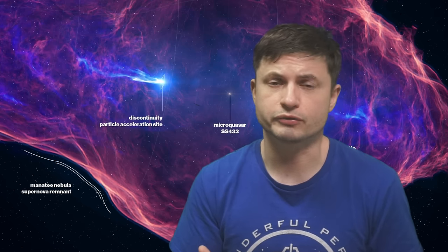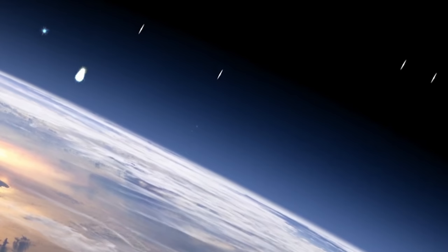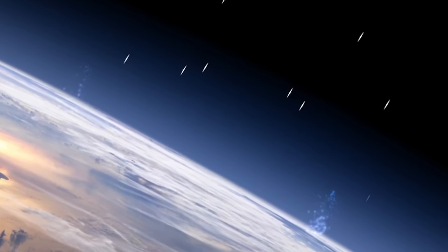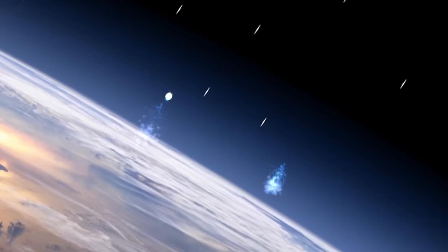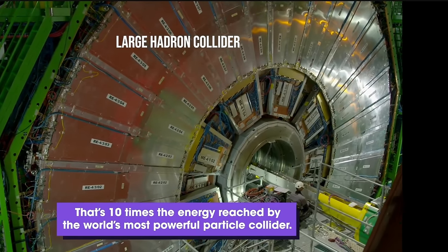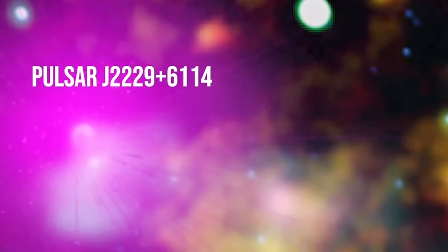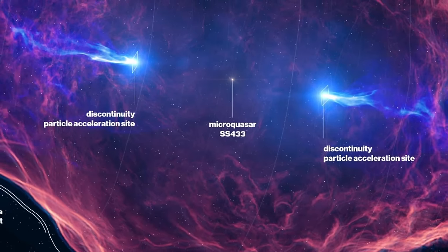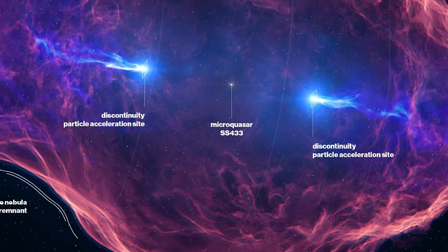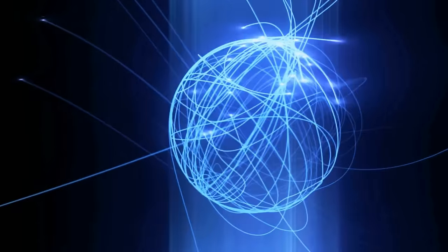This source here is so powerful that it's even believed to produce what's known as pevatrons, or petaelectron volt cosmic rays, whose energy was absolutely ridiculous, much more powerful than anything we can produce on Earth. And though these have been discovered from other black hole and neutron star objects, SS-433 seems to be the most powerful.